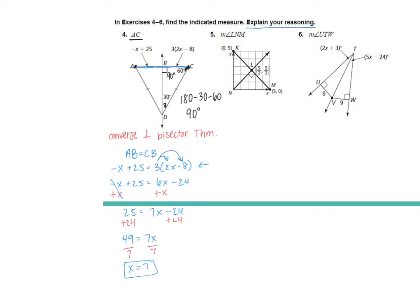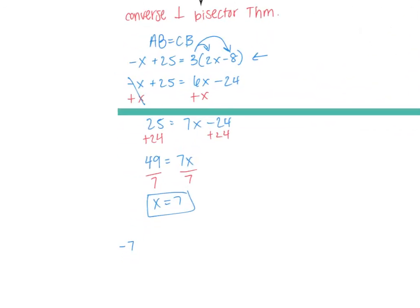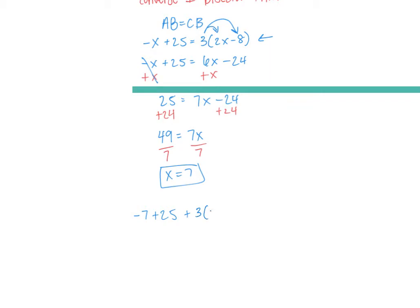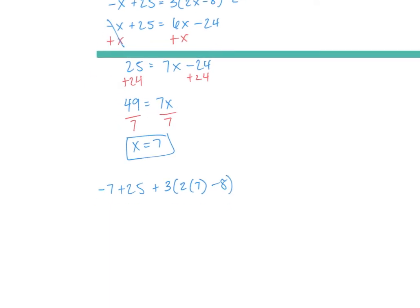We plug in x and then add them together, because AC is both of those sides — not just one of those line segments. So: negative 7 plus 25, plus 3 times (2 times 7 minus 8). That gives us 18 plus 3 times 6, which is 18 plus 18, equals 36.